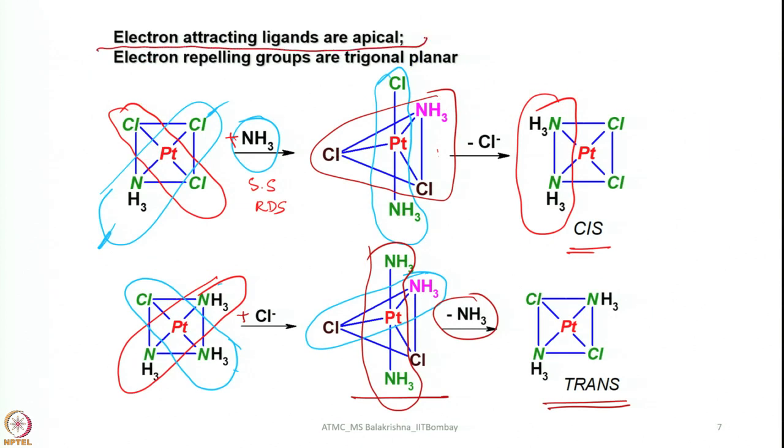What is important to remember is: when generating an intermediate having coordination number 5 with trigonal bipyramidal geometry, electron-attracting ligands are apical and electron-repelling groups are trigonal planar. Among the pair of ligands, anionic ligands are essentially electron-repelling groups and neutral or cationic ligands will be electron-attracting. Based on this, we can explain very nicely which isomer is going to form — and that is exactly what happens. This kinetic electrostatic theory holds good for anionic ligands such as halides.